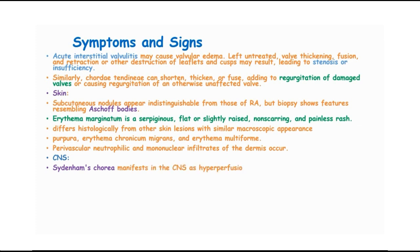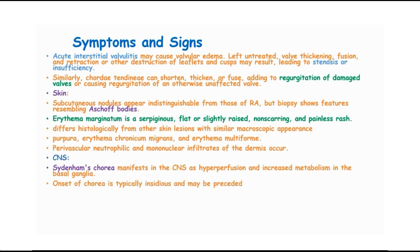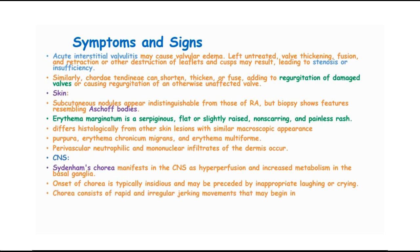In the central nervous system, we experience Sydenham's chorea, and this manifests as hyperperfusion and increased metabolism in the basal ganglia. Onset of this chorea is typically insidious and may be preceded by inappropriate laughing or crying, and chorea consists of rapid and irregular jerking movements which may begin in the hands but often become generalized involving the feet and face.